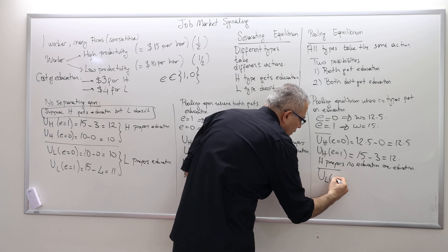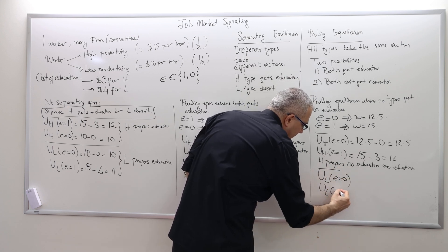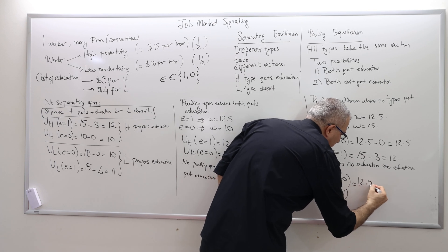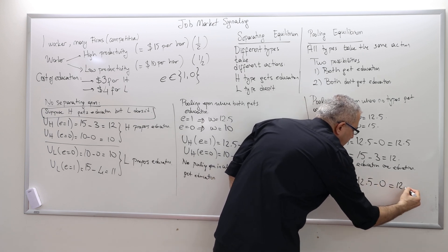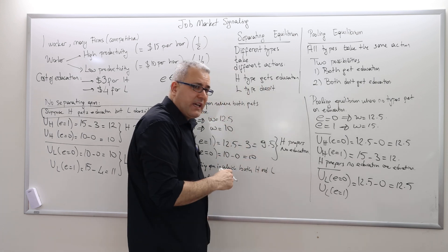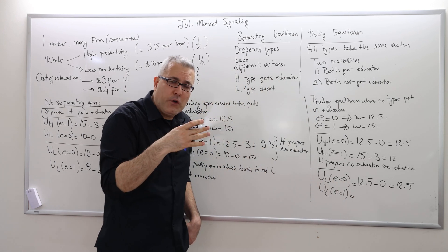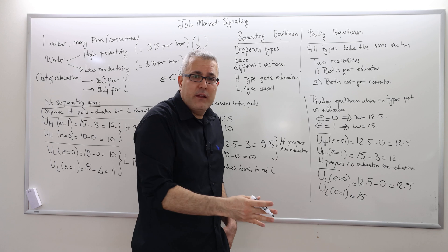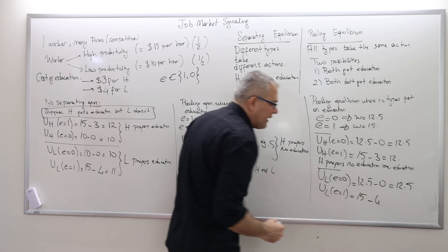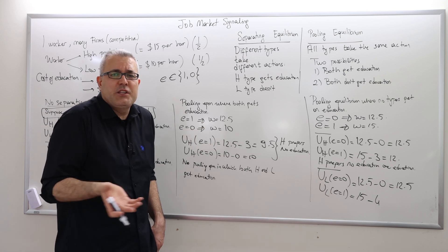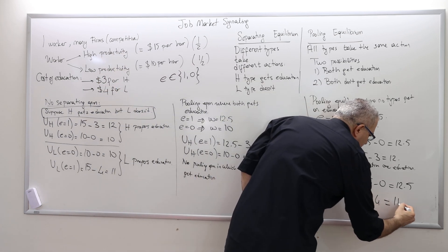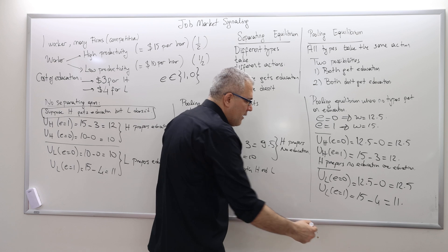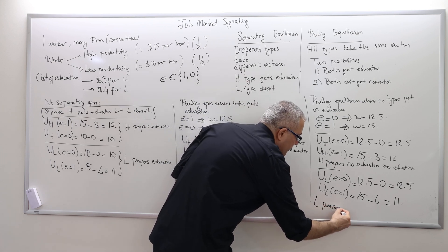What about the low type? If the low type gets no education, his wage is $12.5 minus zero cost — net utility $12.5. If he does get an education, firms assume he's the high productivity guy and pay $15, but he suffers a cost of $4, giving net utility of $11, which is less than $12.5. So the low type also prefers no education.